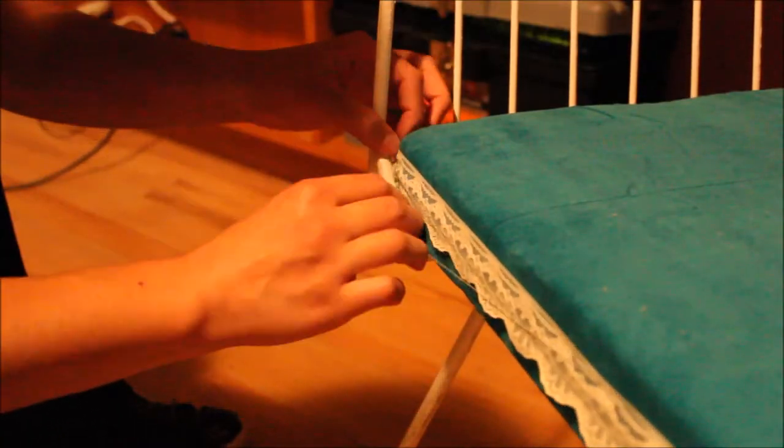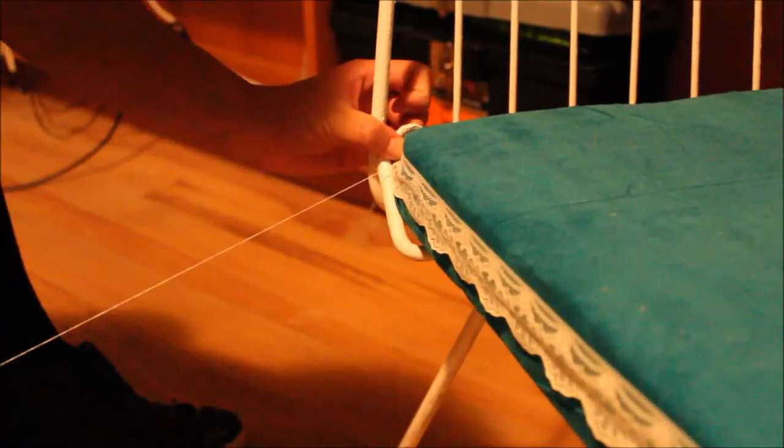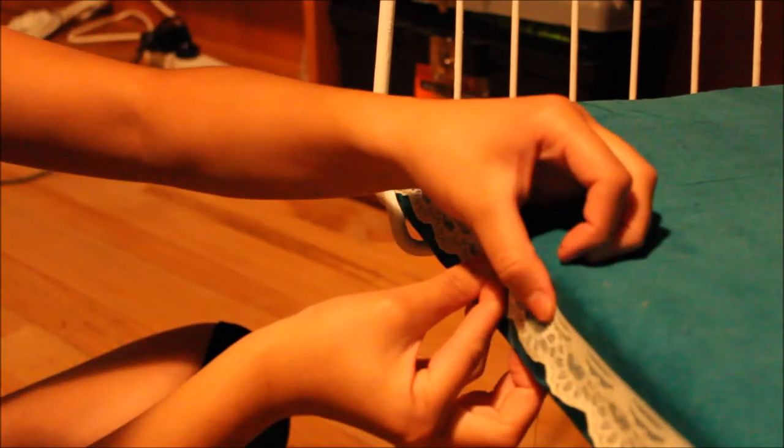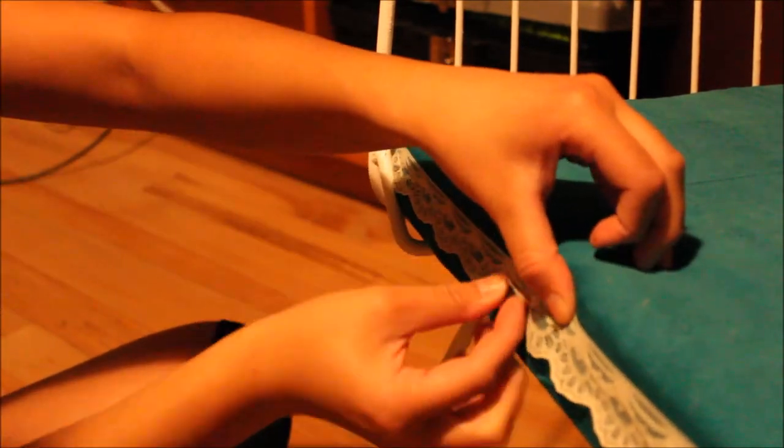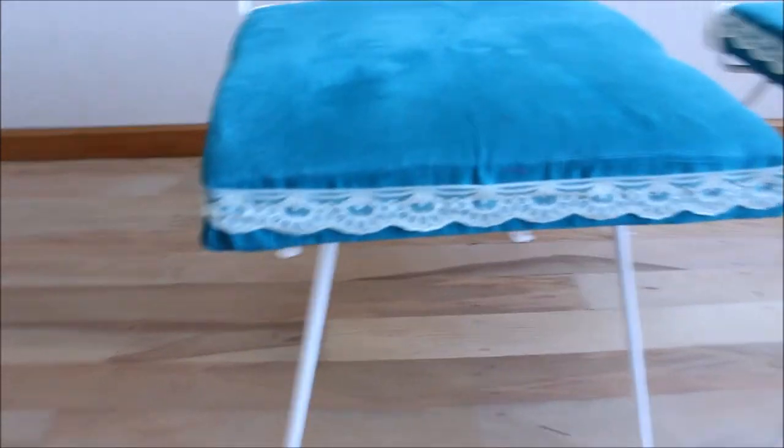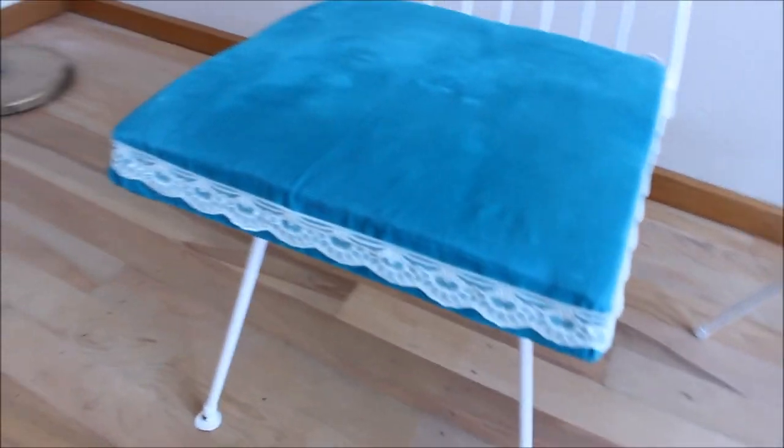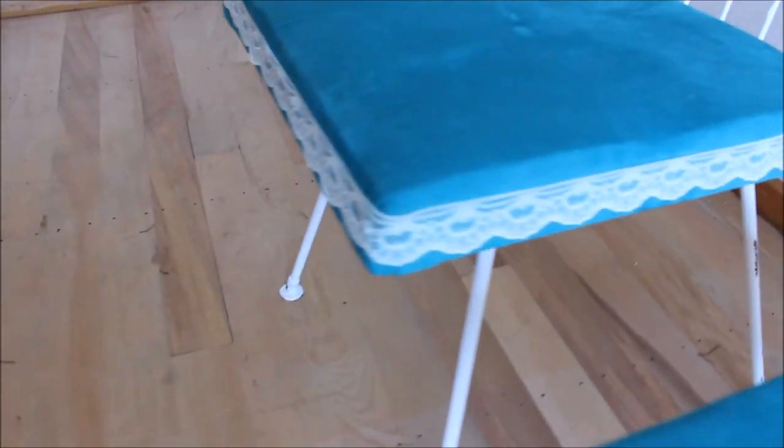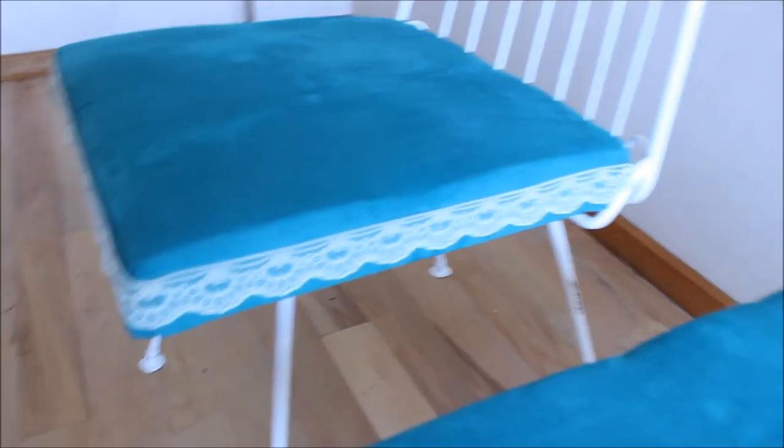We added a lace trim around the edges of the seat just by sewing a running stitch around all of the edges. And this is how the seats turned out. We also made some simple pink cushions just to sit on top to give the chairs a little bit of pop. Thank you so much for watching.